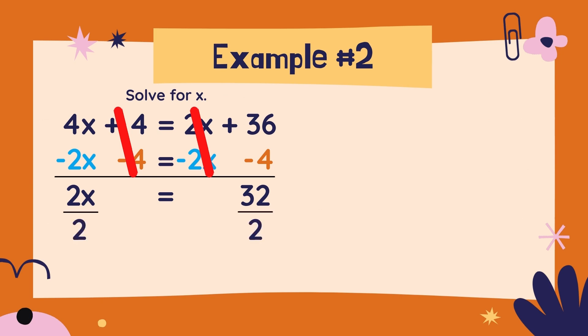On the left, that will give us x, and on the right, that will give us 16. Now I did this one a little bit differently than I did in example one. In example one, I did one step at a time.